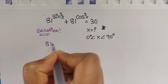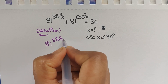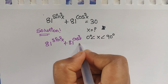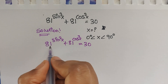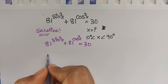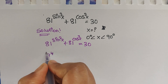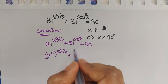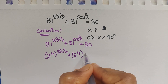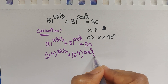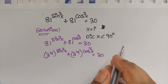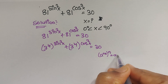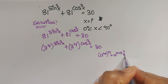So, 81 to the power of sin²x plus 81 to the power of cos²x equals 30. Here, 81 can be written as 3 to the power of 4. So we get: (3⁴) to the power of sin²x plus (3⁴) to the power of cos²x equals 30. We can apply the formula: a to the power of m, whole to the power of n, equals a to the power of m times n.